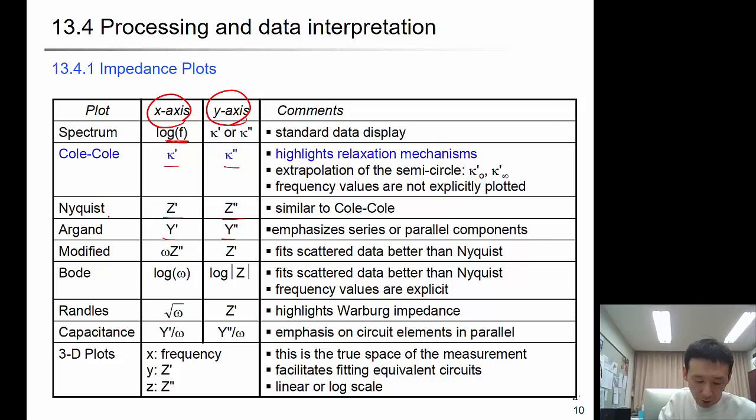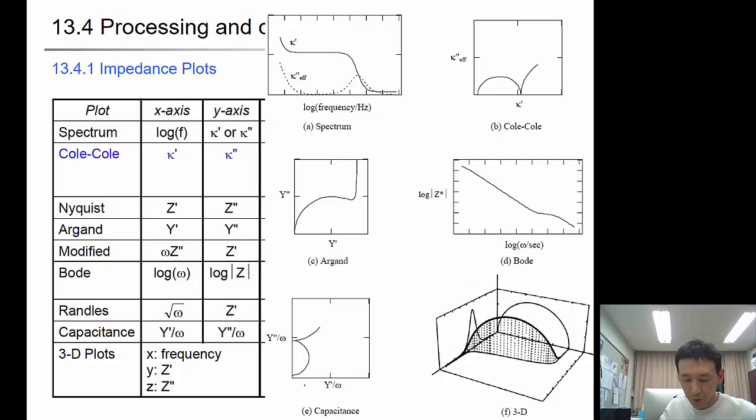Or Z prime versus Z double prime, Y prime versus Y double prime. They all have different names: Nyquist plot, Argand plot, modified Argand plot, Bode plot, etc. Each highlights different characteristics of the response. For example, kappa plot highlights the relaxation mechanism, and the spectrum shows the frequency response. This is an example of the spectrum and different impedance plots: kappa prime versus frequency, kappa double prime versus frequency, and kappa double prime versus kappa prime, Y double prime versus Y prime, etc.